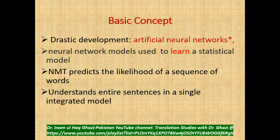We can get some concept of artificial neural networks from this image. On the left side is the input layer where different inputs are shown, then hidden layers which are not visible, and then the output layers. These artificial neural networks are designed on the basis of the human brain — the way the human brain works — and are used in different areas of human activity.